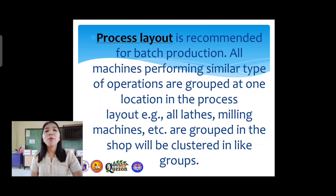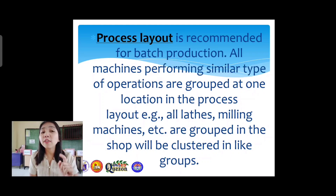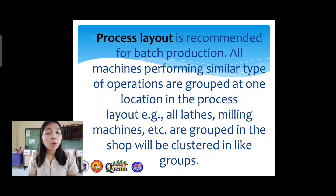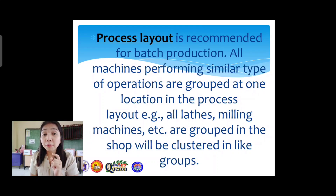When we say process layout, it is recommended for batch production. All machines performing similar types of operations are grouped at one location. For example, all lathes and milling machines are clustered in like groups. That is process layout — recommended for batch production, grouped based on the functions or operations of the materials at a specific location.